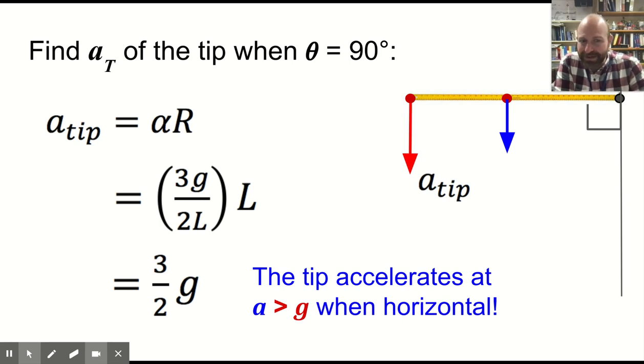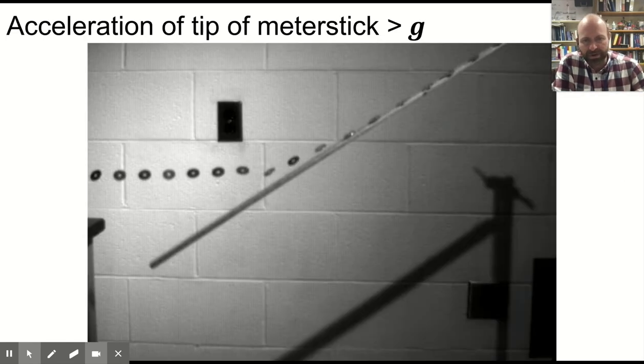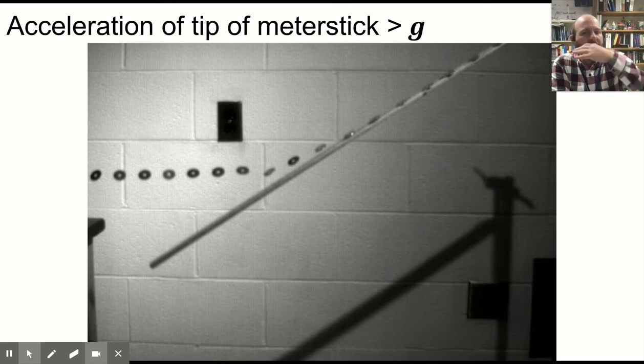3 halves g is bigger than g, so this shows that the tip accelerates at greater acceleration than g at the beginning when it's horizontal. The rate of acceleration will slow until it's at the bottom, where it has no acceleration, but that's how it works. And this is why we get the situation where the washers are free-falling, and the ruler is falling out from underneath.